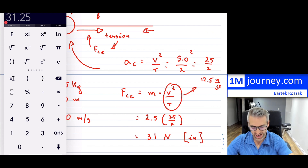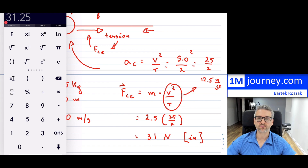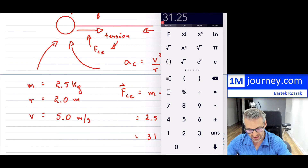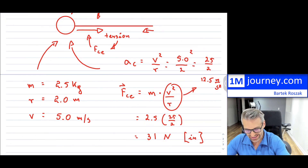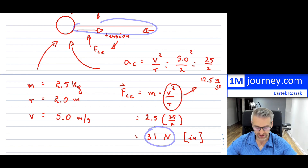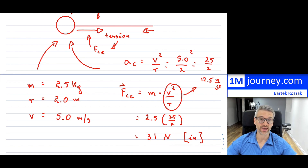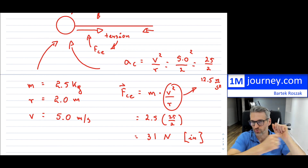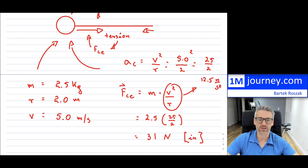What this means is that the tension in the rope would have to withstand 31 Newtons. If it can't withstand that force and breaks, there's no more spinning ball.